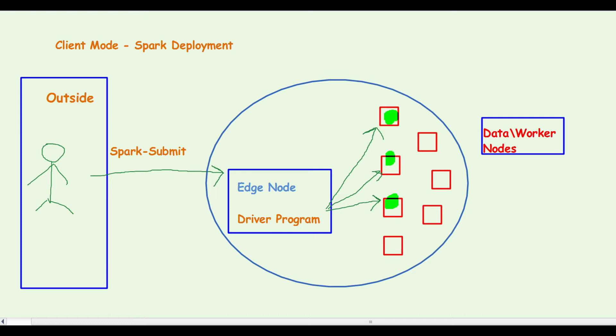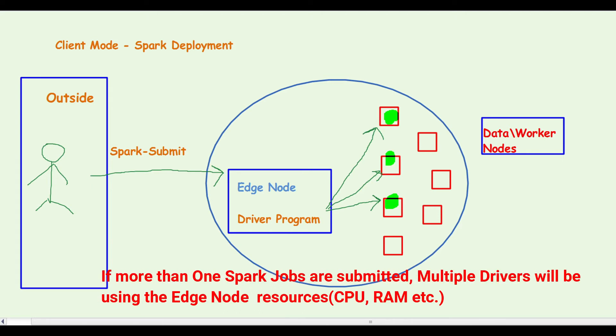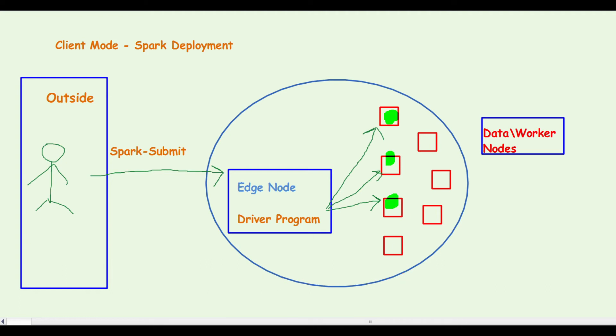Imagine if you have more than one person or more users who are submitting various Spark jobs at the same time. All the driver programs corresponding to those Spark jobs would be running on the edge node itself, so this might cause lack of resources for some of the driver programs to trigger or during their execution, which might cause the job to fail. So this is a major disadvantage while using client mode to submit a Spark job.